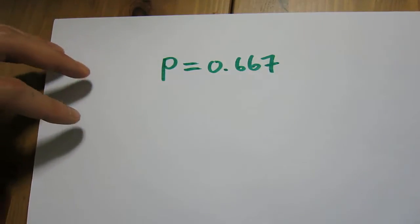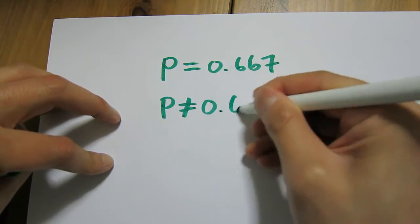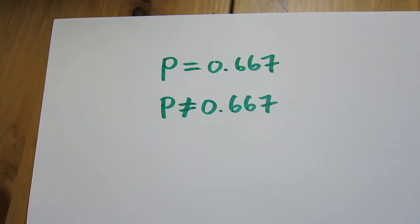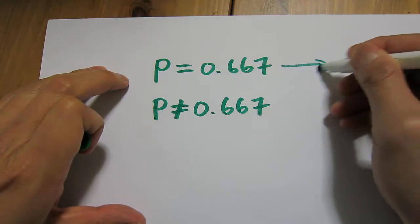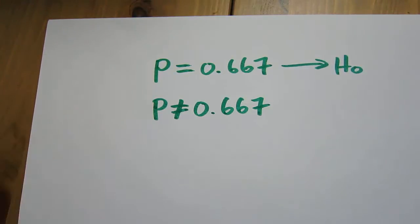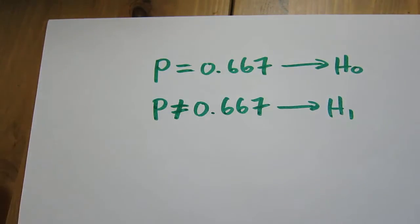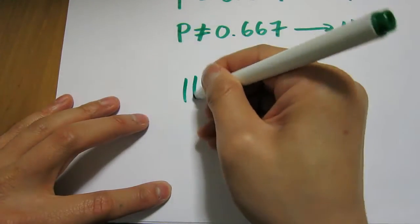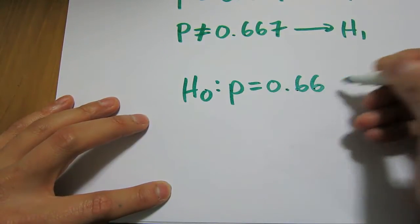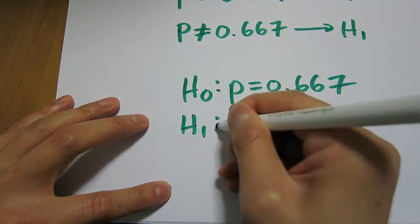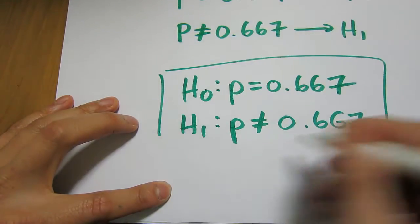Now, what is the counterclaim? The opposite is that the population proportion is not equal to two-thirds. The claim with the equal sign is always your null hypothesis, so the claim without the equal sign must be your alternate hypothesis. So to write this up properly: H0 is that the population proportion equals two-thirds, and the alternate is that the population proportion is not equal to two-thirds. And that's Part A done.